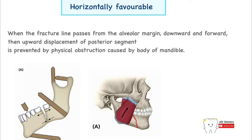For horizontally favorable fractures, we are viewing the fracture line in a horizontal plane. The mandible is made up of multiple smaller units — the body, angle, coronoid, and condyle. Whenever an impact is delivered at the level of the angle of the mandible, it tends to break the mandible mainly into two parts: the body of the mandible and the ramus of the mandible.